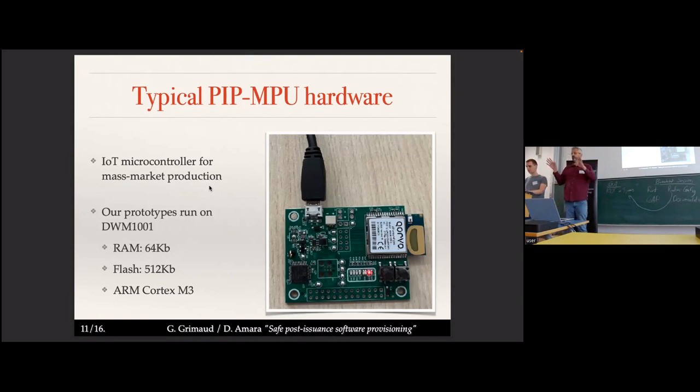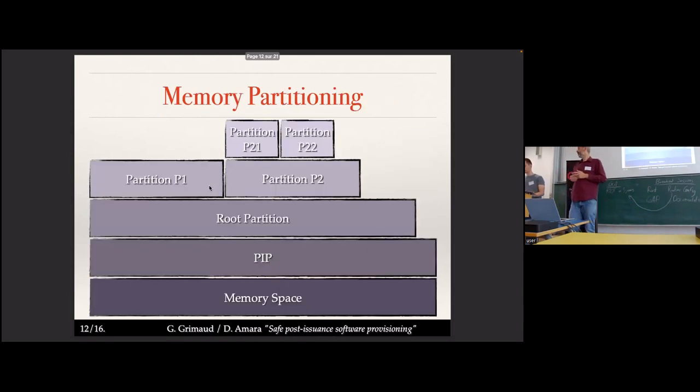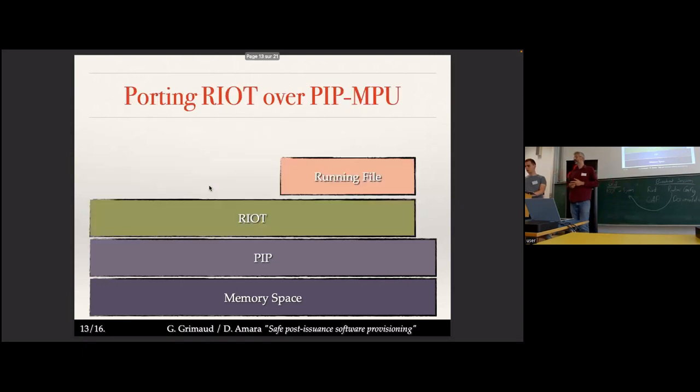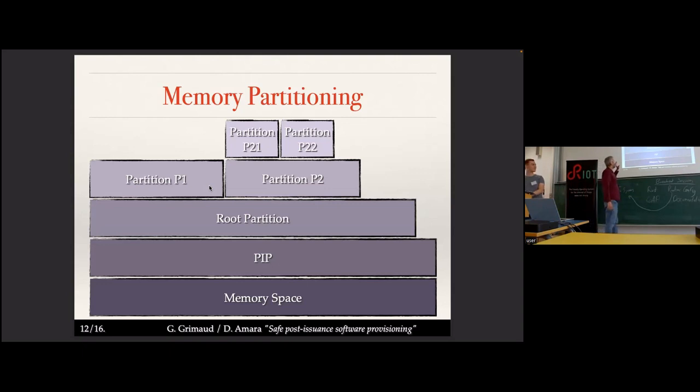So what more procedure partition? What is partition? When you start, all the memory space is available. And when the software starts, PIP is booting and PIP coats all the memory space. PIP starts root partition, the very first partition, and gives almost all the memory to the root partition. So the root partition, the only space not given to the root partition is the memory space used by PIP itself. And it's mandatory in order to prove that PIP is the one who is dealing with the MPU. Nobody else can change data structure and code proved. This is part of the proof.